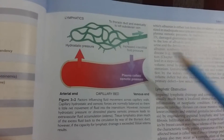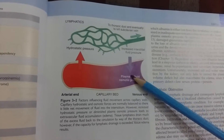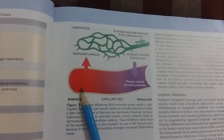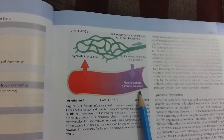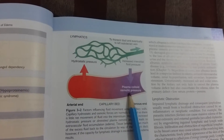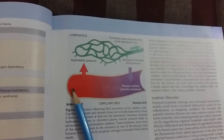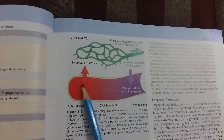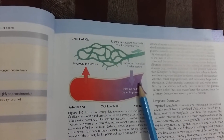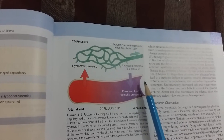Let's see this diagram showing the factors that influence fluid movement. This is a capillary bed — this is the arterial end and this is the venous end. This is hydrostatic pressure and this is plasma colloid osmotic pressure. Normally, fluid outflow occurs due to the increase of hydrostatic pressure, and fluid inflow occurs due to the decrease of osmotic pressure.